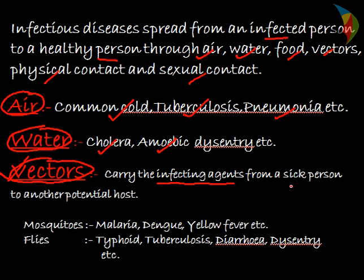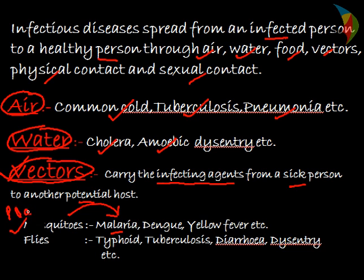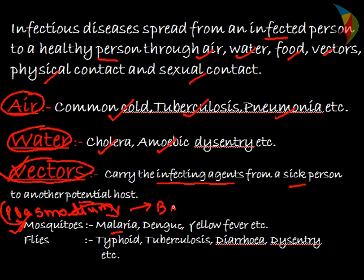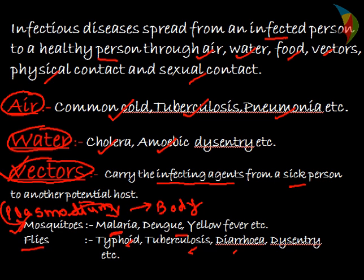Vectors are organisms or animals which carry infectious agents from a sick person to a potential host. The best example is mosquitoes — Plasmodium vivax, a protozoan present in the mosquito, enters the body of a person and causes malaria or dengue. Flies also act as vectors — if a fly sits on a dirty place and then sits on your food, and you consume that food, you are likely to suffer from dysentery, typhoid, tuberculosis, or diarrhea.